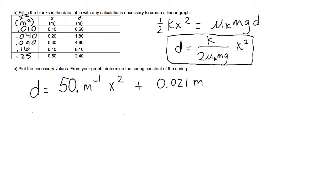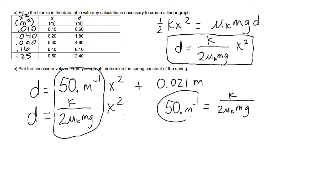And then I'm going to write my theoretical relationship right under it, which is d equals k over 2 mu k mg times x squared. Now you can see how our experimental slope and our theoretical relationship line up as usual. And then we're going to now set these two values equal to each other. Here is the experimental value of the slope. Here's the theoretical value of the slope. Setting those equal, and I'm going to now solve for k, the spring constant, which is what I'm actually trying to do to solve this problem.